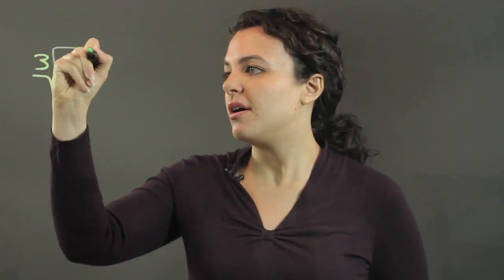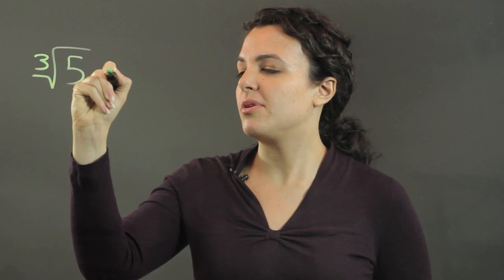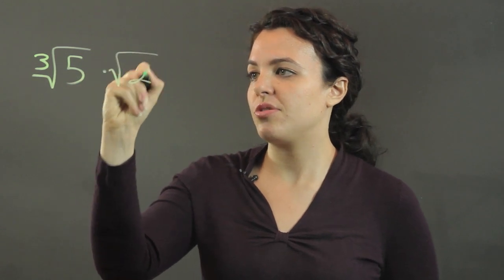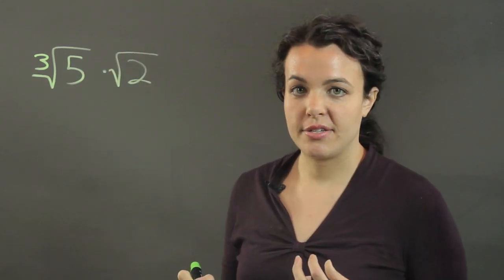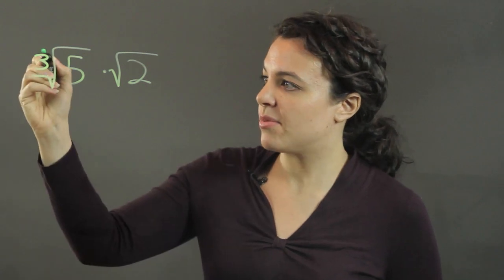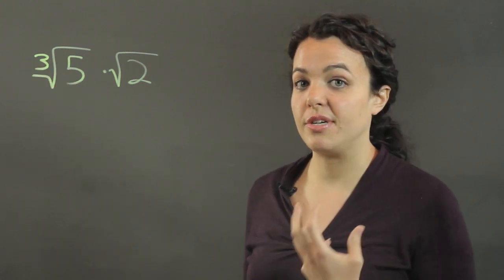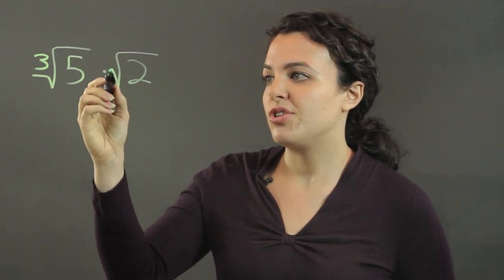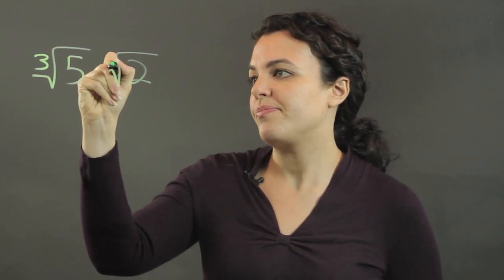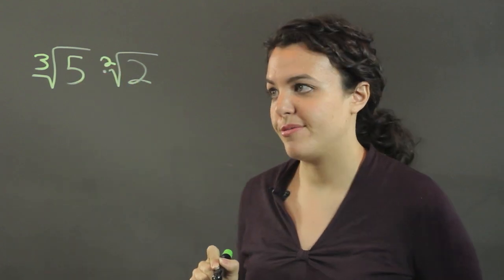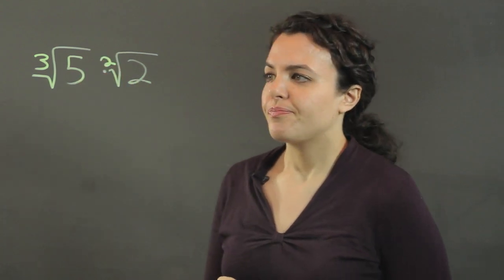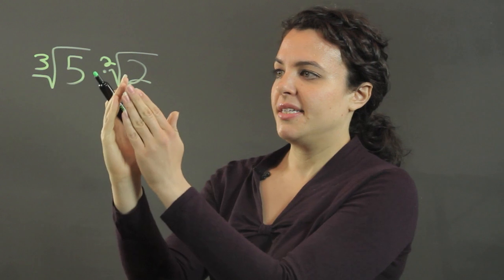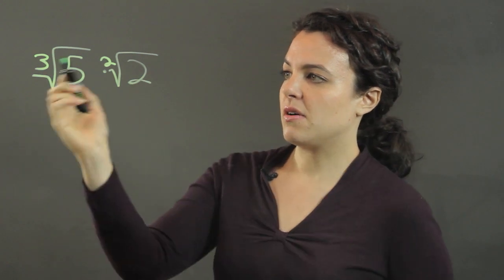So let's try the cubed root of 5 being multiplied by the square root of 2. Now an index in a radical is this number here telling us what kind of root it is. And when an index is not actually written, we assume that it's a 2 here. It's a square root. So we can't combine these until the indices are the same.